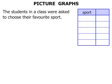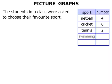The sport and the number of students who chose each one. The various sports are: netball — four people chose that; cricket — six people chose that; tennis — two people chose that; swimming — three people; and football — eight people chose football.